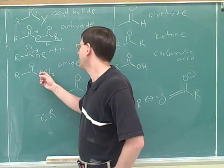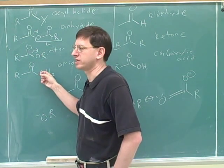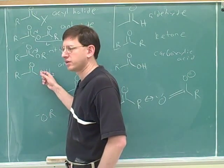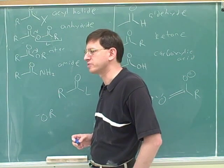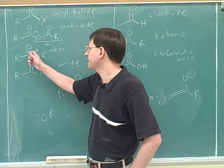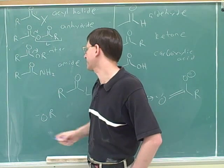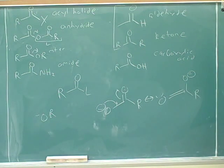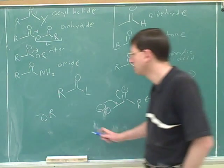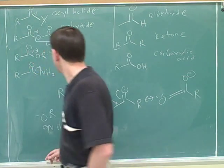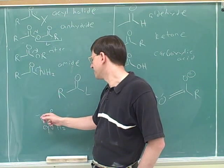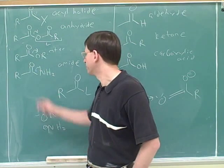Why are amides at the bottom of reactivity? Nitrogen is less electronegative than oxygen, so nitrogen is less willing to pick up a negative charge when it leaves. Things that are less electronegative are not as good leaving groups because a good leaving group must take the electrons with it. Who wants to take electrons? Electronegative atoms. So oxygen is a better leaving group than nitrogen — the OR minus from an ester is happier than the nitrogen anion from an amide.